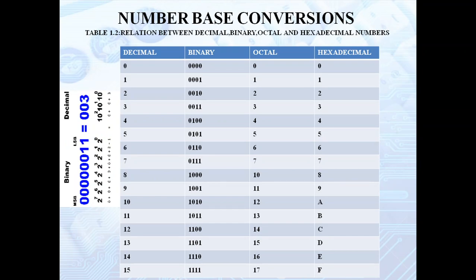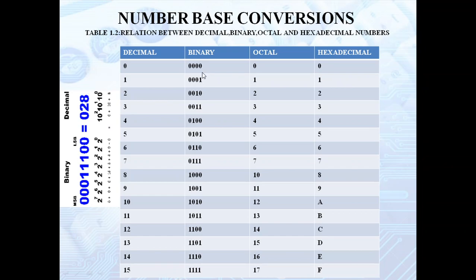Let us see the relation between decimal, binary, octal, and hexadecimal numbers. In decimal, the number system goes from 0, 1, 2, 3, 4, 5, 6, and it continues. The binary equivalent of 0 in 4-bit representation is 0000. Starting from the LSB bit, the positional weight is 2 power 0, which equals 1; the next bit has positional weight 2 power 1, that is 2; the third bit has positional weight 2 power 2, that is 4; and the fourth bit has positional weight 2 power 3, that is 8.